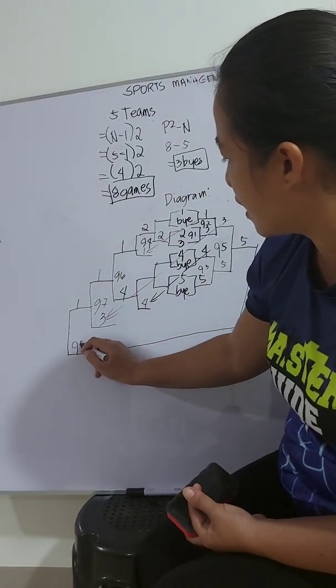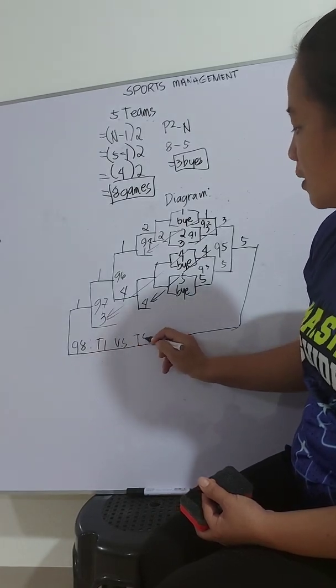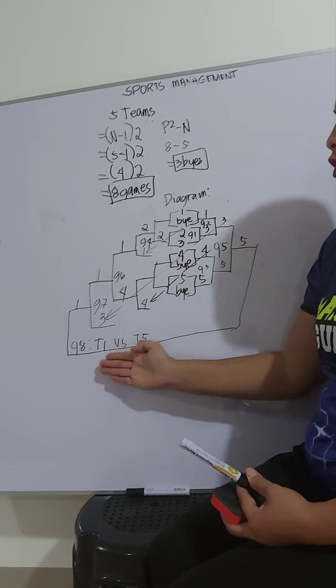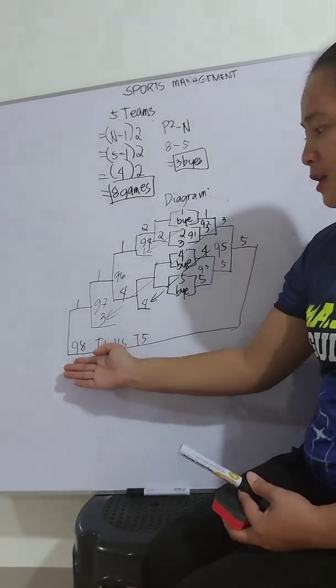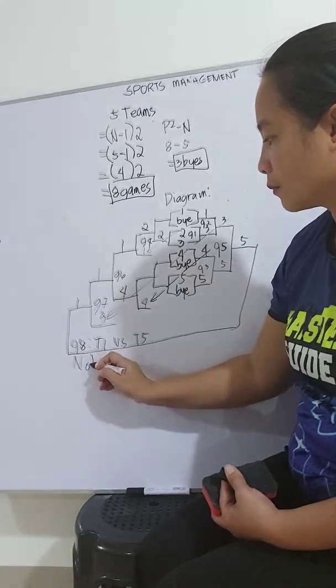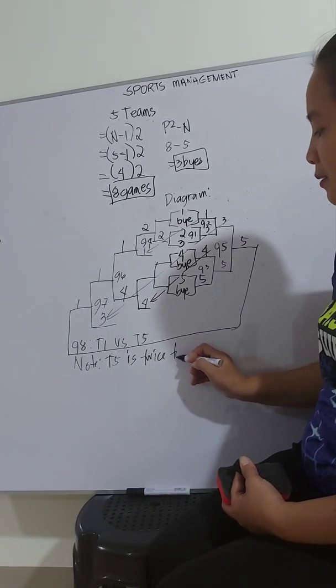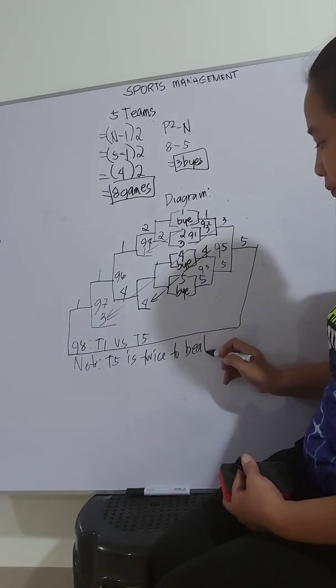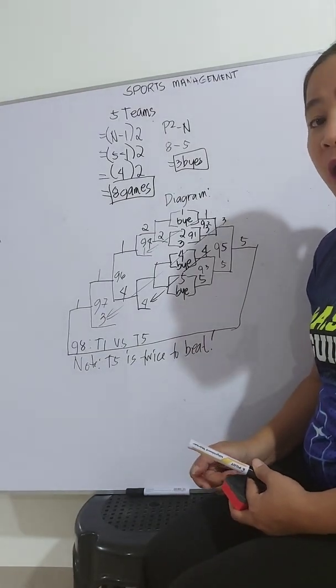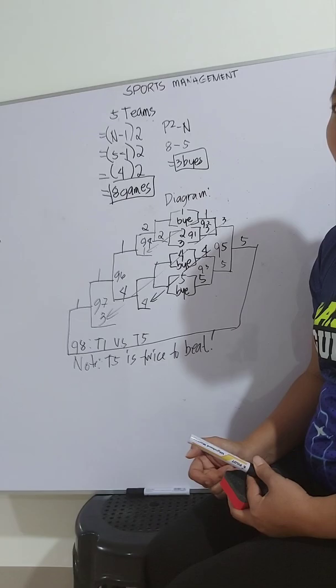And so lastly, we have this game 8 to be played between team 1 versus team 5. So with this presentation, you're going to say that team 5 is the champion. It could be team 1 will be our winner in game 8. So that's why we need to write a note here that team 5 must be beaten twice. If ever team 5 won in game 8, then team 5 is our champion. But if ever team 1 won in game 8, then there will be a rematch for championship game.